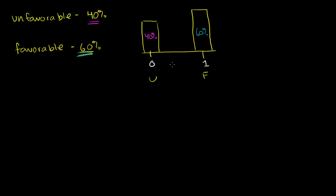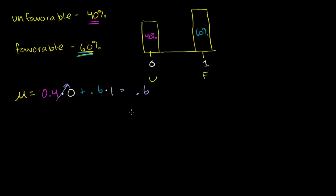Let's say u equals 0 and f equals 1. Now the notion of taking a probability-weighted sum makes sense. The mean of this distribution is going to be 0.4 times 0, plus 0.6 times 1, which equals 0.6. No individual can take on the value of 0.6 — no one can say they are 60% favorable and 40% unfavorable. Everyone has to pick either favorable or unfavorable.